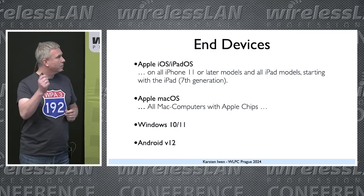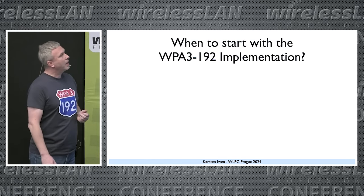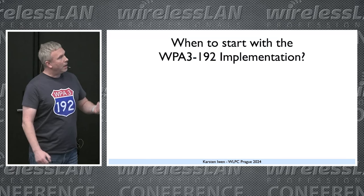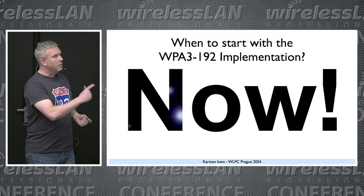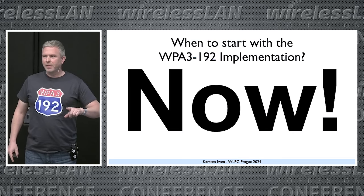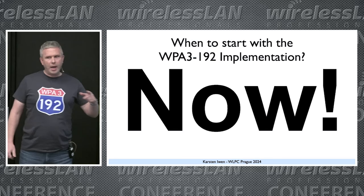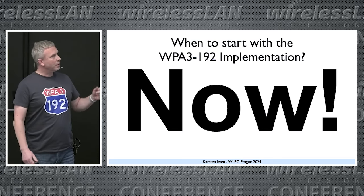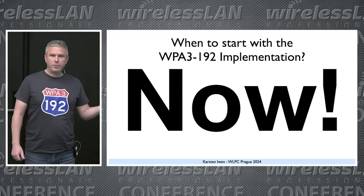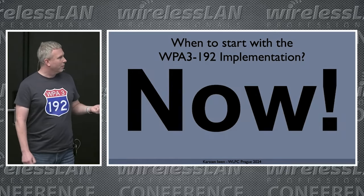With that, the last point: when should we start with the implementation of WPA3 192-bit mode? My answer would be now — not with the SSID, but with the preparation to implement a new PKI that gives us 192-bit security level, for example with elliptic curve 384.